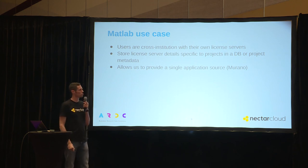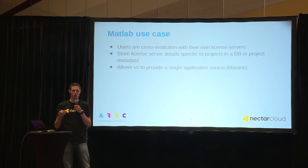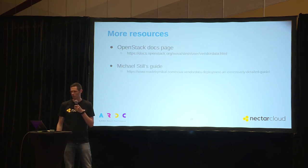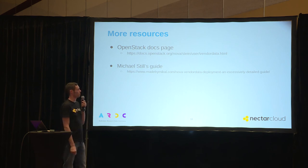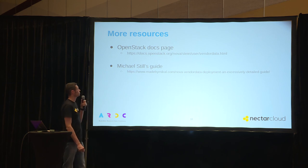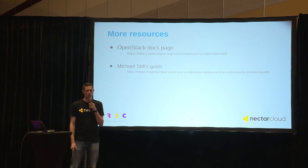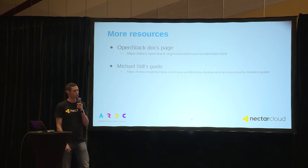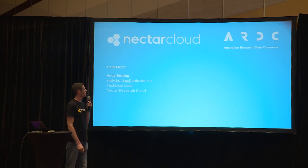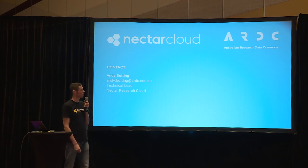Once you start to think about what you can do for your users by providing dynamic vendor data, there are a lot of possibilities to automate things and make them much simpler. The OpenStack docs page on vendor data is quite useful if you want to look into it more, and Michael Still was the instigator of a lot of this dynamic vendor data work that went into Nova — his blog post is worth looking at for more context. That's it from me. I'm happy to take questions about dynamic vendor data or the Nova Pollinate service. Thanks very much.